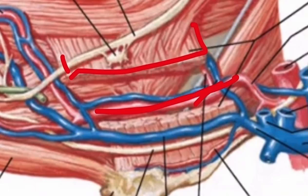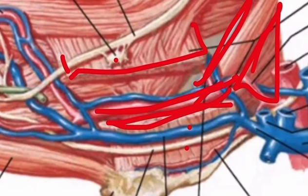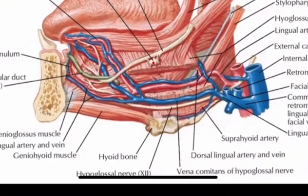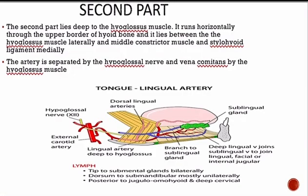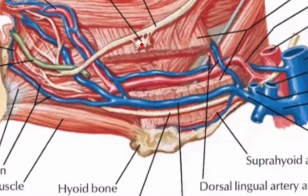The hyoglossus muscle is present laterally and the middle constrictor muscle and stylohyoid ligament are present medially. The artery is separated from the vena comitans and the hypoglossal nerve by the hyoglossus muscle. It also runs horizontally through the upper border of the hyoid bone — you can see this is the hyoid bone and the artery running along its upper border.